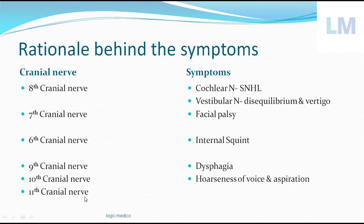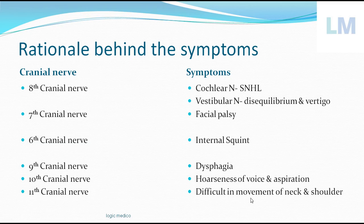The eleventh cranial nerve — the accessory nerve — supplies soft palate and pharyngeal muscles, causing dysphagia, and also the sternocleidomastoid and trapezius. So the patient is unable to move the neck properly and has difficulty with shoulder movement, especially the shrugging movement. If the brainstem gets involved, there can be additional sensory loss. Compression on the cerebellum results in imbalance — ataxia — the person cannot walk in a straight line; they sway like a drunken person, which is called cerebellar ataxia or drunken gait.